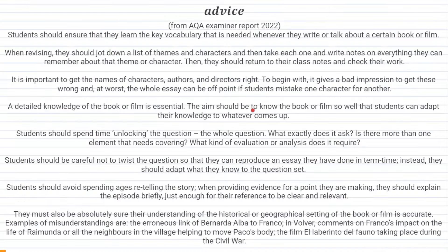Here is more advice from the AQA Examiner Report from June 2022. Students should ensure that they learn the key vocabulary that is needed whenever they write or talk about a certain book or film. When revising, they should jot down a list of themes and characters, then take each one and write notes on everything they can remember. Then they should return to their class notes and check their work — this is a good technique like blurting: write down everything you can remember and then double check what you missed out on at the end.